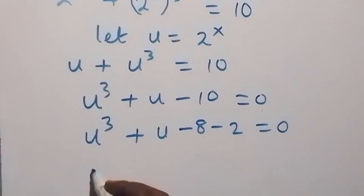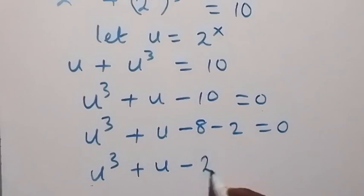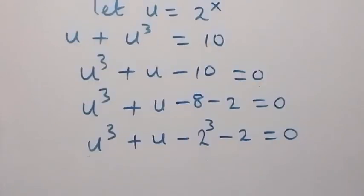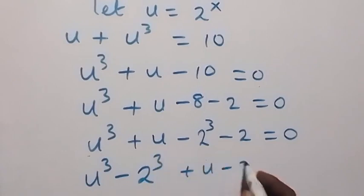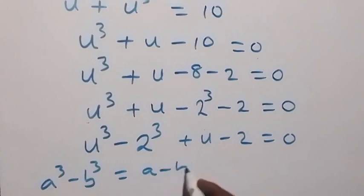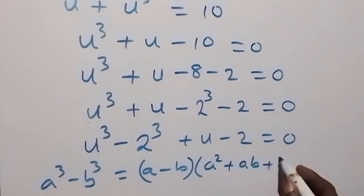We have u raised to power 3 minus 8 plus u minus 2 equals to 0. Then we have u raised to power 3 plus u minus 2 equals to 0. Here, when we have a raised to power 3 minus b raised to power 3, this is the same as a minus b into bracket a squared plus ab plus b squared.